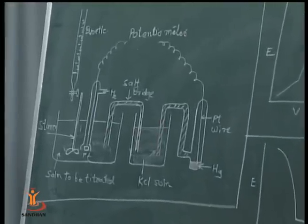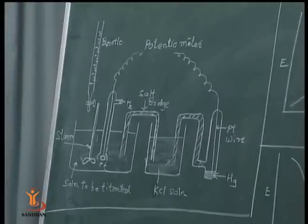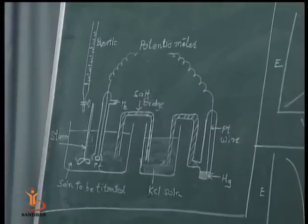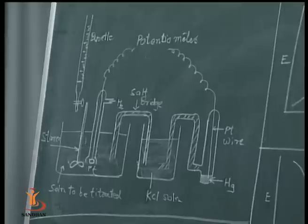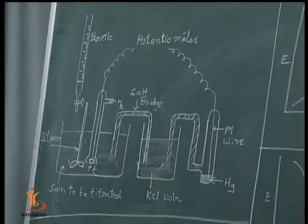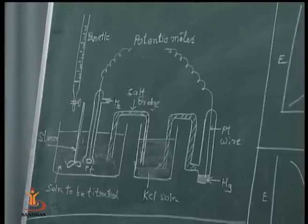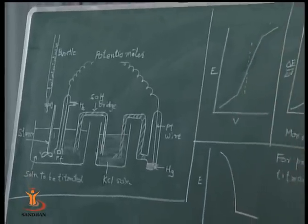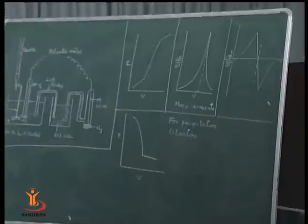When we add NaOH from the burette in a neutralization titration, the number of hydrogen ions decreases. NaOH neutralizes the hydrogen ions, and the EMF is recorded on the potentiometer. From the graph, we can see three types of plots: first, EMF versus volume; second, ΔE/ΔV versus volume of NaOH added; and third, Δ²E/ΔV² versus volume added.